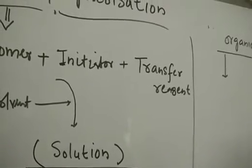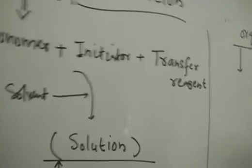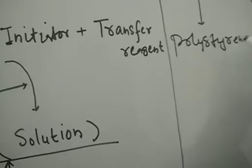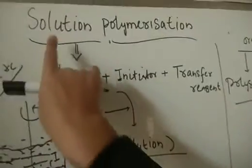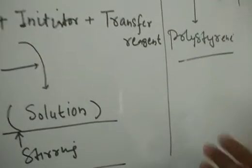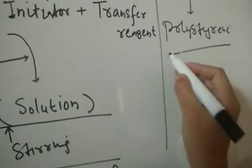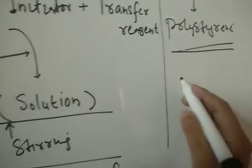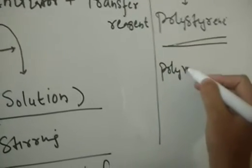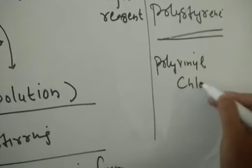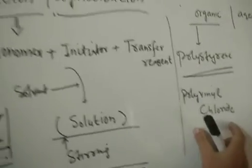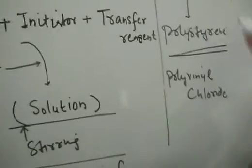For example, if we want to prepare polystyrene, we can do so through the solution polymerization technique using an organic solvent like chloroform, acrylonitrile, or DMF. Similarly, polyvinyl chloride can also be prepared. So polystyrene and polyvinyl chloride are two important examples of polymers prepared through solution polymerization using organic solvents.